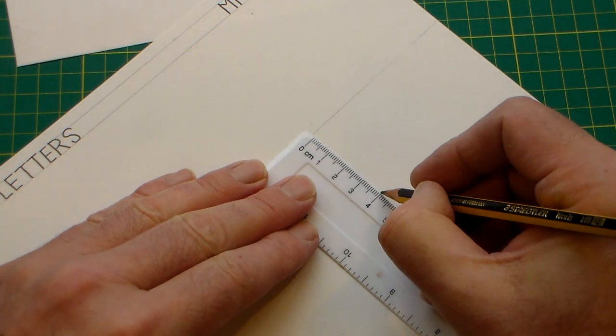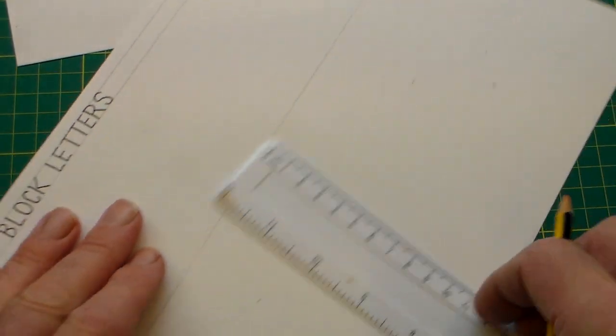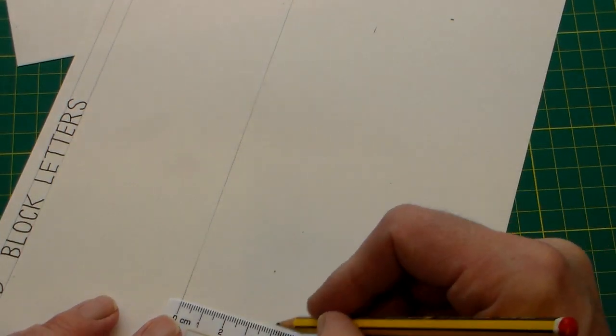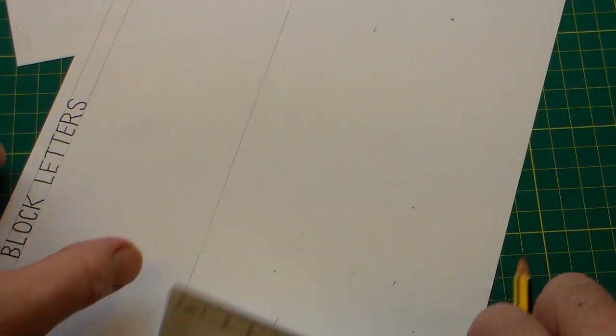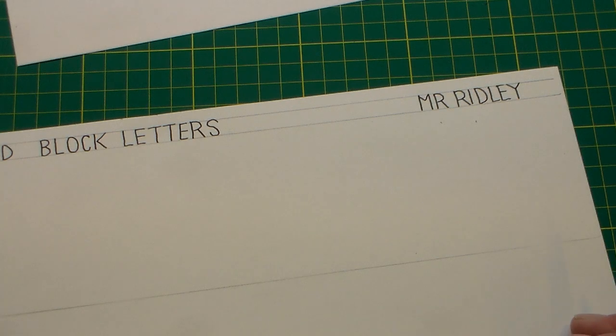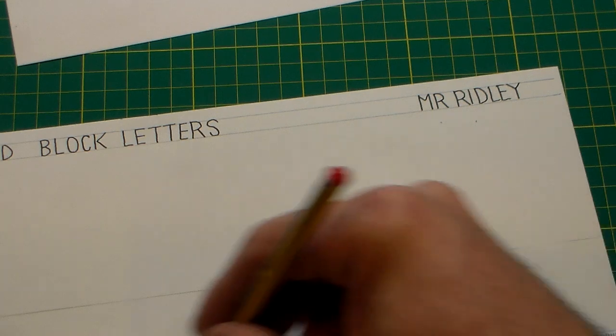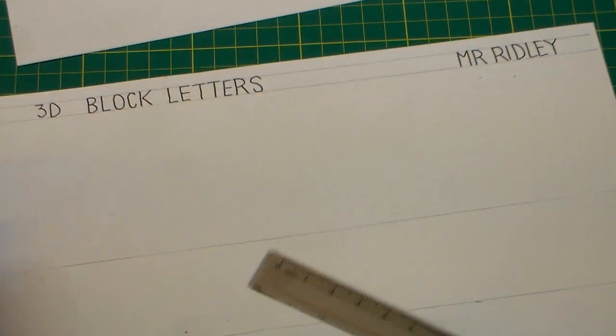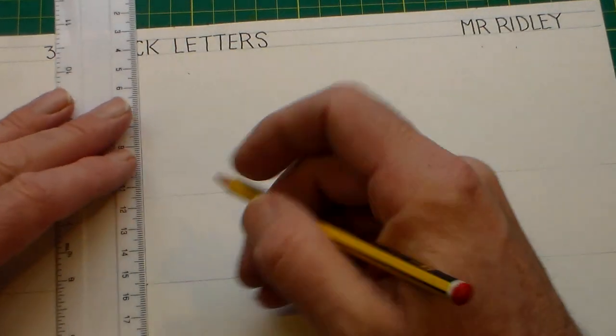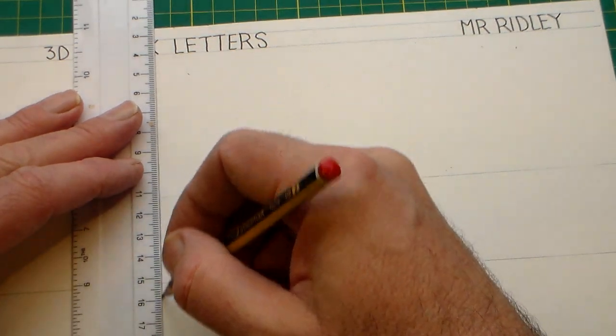You could do a different height, but I'm going to do these as four centimeters and I'm going to move along here and do four centimeters again. I'm going to put my ruler on one point, bring it up to the other point, and draw just a light construction line. Now you want to draw a light construction line because we might be getting rid of these later.